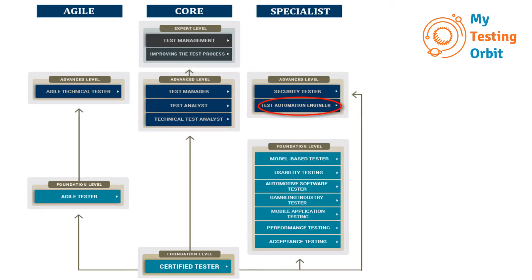This image which you are seeing has been taken from ISTQB.org. It shows all the certifications currently being offered by ISTQB. As you can see, test automation engineer is an advanced level certification. If you are here and aiming to take the certification, it means that most probably you have already taken the foundation level exam and are familiar with these kinds of exams.